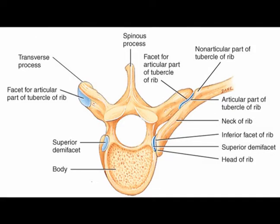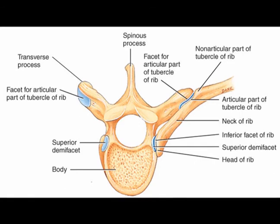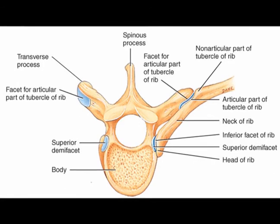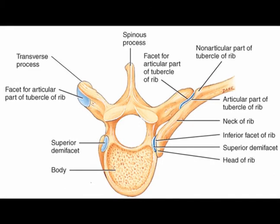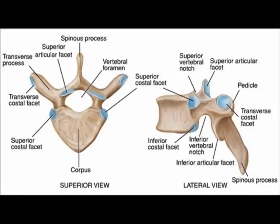The tubercle of these ribs, just distal to the rib head, articulates with the ventral portion of the transverse process of the same numbered vertebrae.